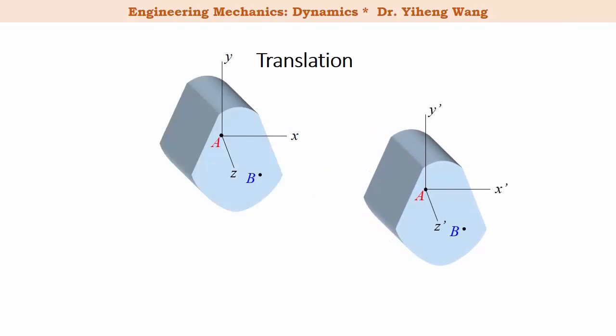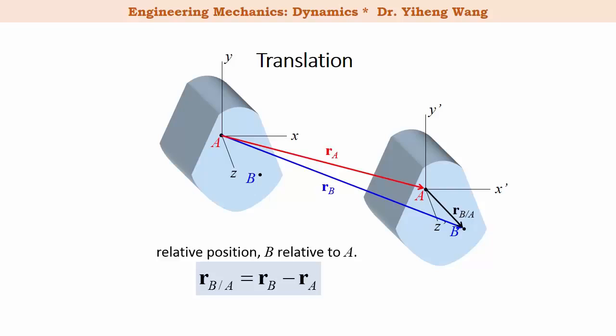Therefore, at any given time during motion, vector R_A represents the absolute position of point A measured from a fixed origin, R_B represents the absolute position of point B, and R_B/A represents the relative position of point B relative to point A. And we already learned that this relative position equals R_B minus R_A.